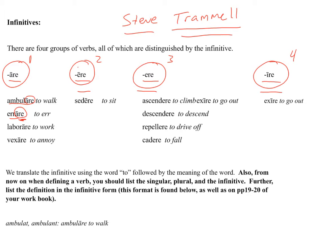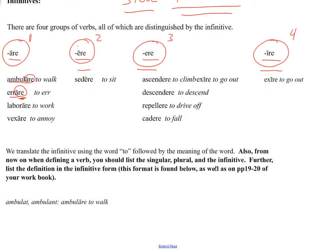Whenever we translate the infinitive into English, it's pretty straightforward. We're going to use the word 'to' followed by the meaning of the word. For example, we have the word 'to walk' — 'to' is the infinitive part and 'walk' is the verb. To err, to make a mistake, to wander off track — 'to' is what signifies the infinitive.